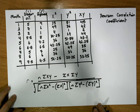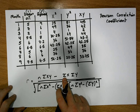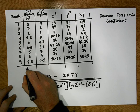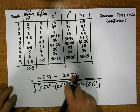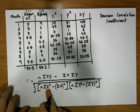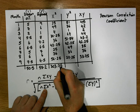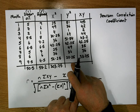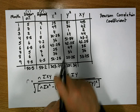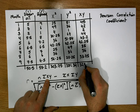Now we sum all our columns to get the sigma value for each. Sigma x, the sum of the x column, is 50.5. Sigma y, the sum of the y column, is 55.2. Sigma x squared, the sum of the x squared column, is 303.75. Sigma y squared, the sum of the y squared column, is 381.34. And sigma xy, the sum of the xy column, is 323.2.